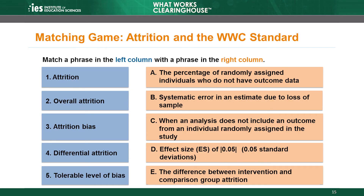We have a matching game to help you practice what you've learned. In this game, you will match a phrase in the left column with a phrase in the right column. The first term listed in the left column is attrition. Does it match to choice A, B, C, D, or E? Please feel free to pause the video at this point so that you can read through the answer choices first. The correct answer is C: when an analysis did not include an outcome from an individual randomly assigned in the study.